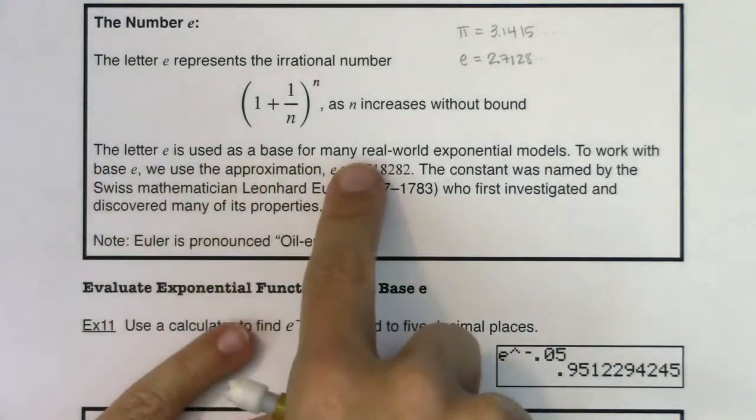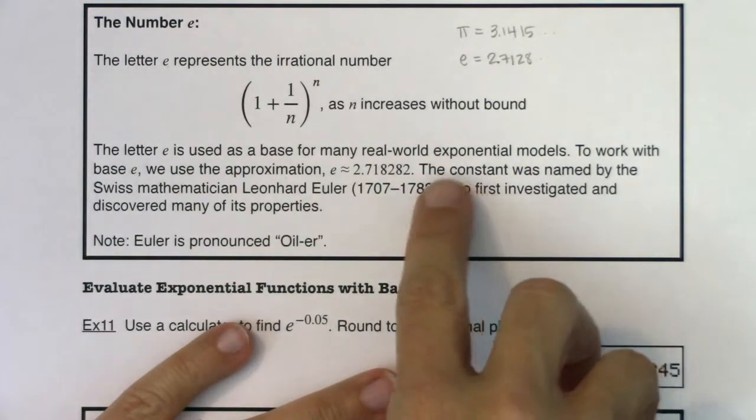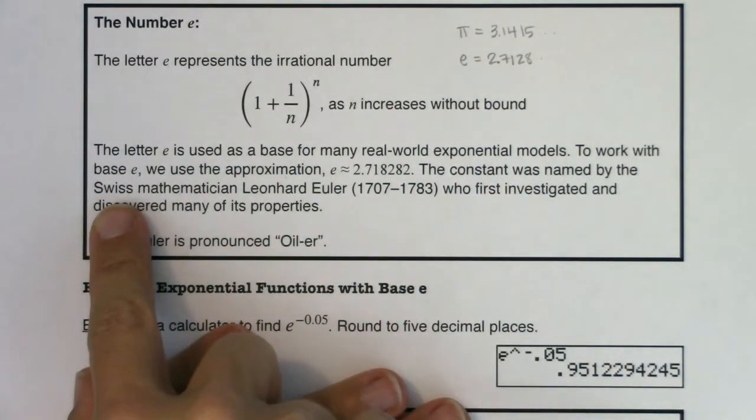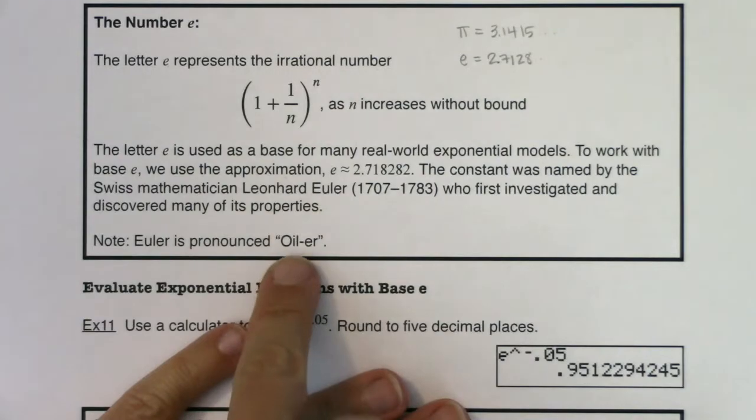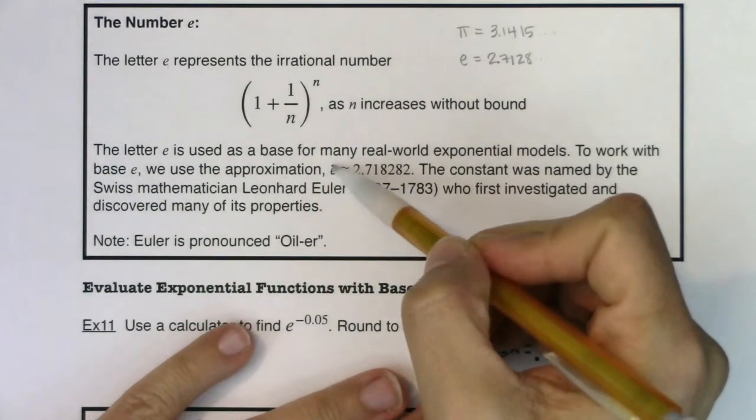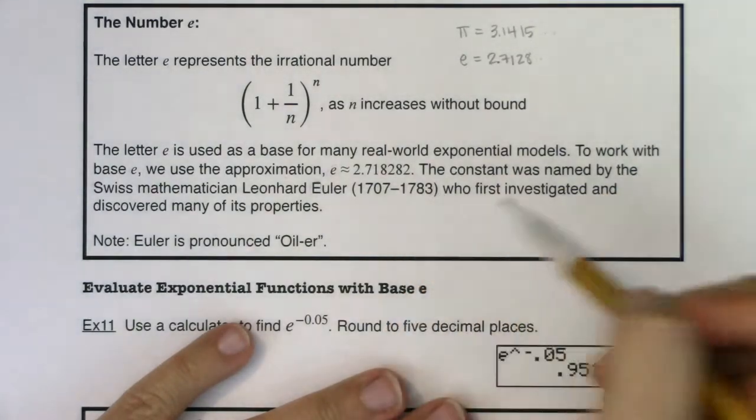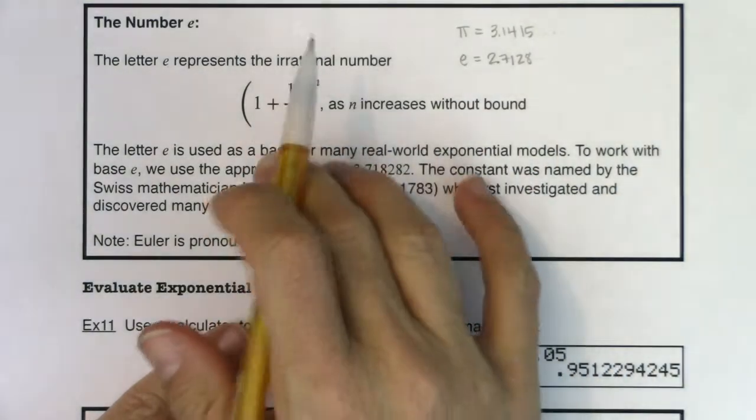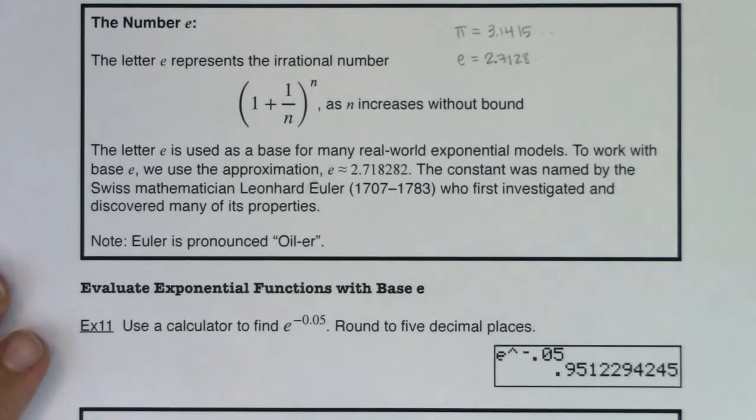And this letter e is used as a base for many real world exponential models. This constant was named by the Swiss mathematician, his name is Leonhard Euler. We've pronounced it Euler, a lot of people think it's Euler. And the reason it's the letter e is because e was the first letter of his last name. So this was back in the 1700s. He first discovered this. So you have Mr. Euler to thank for this number.